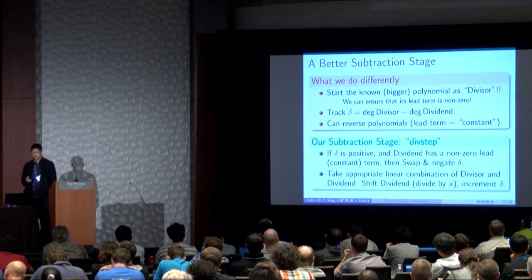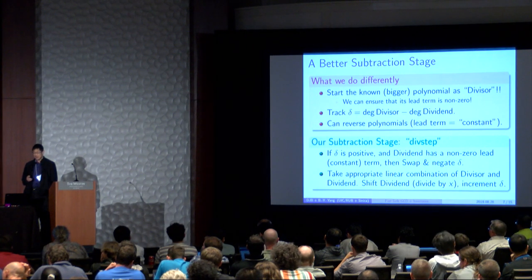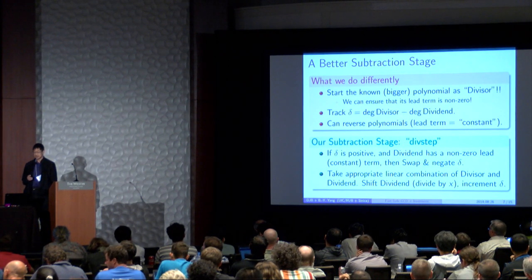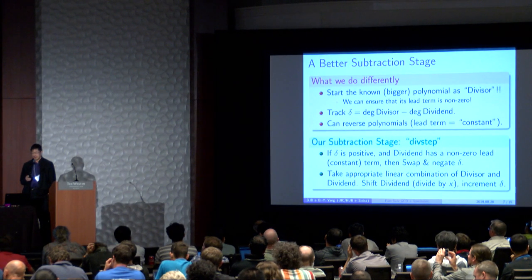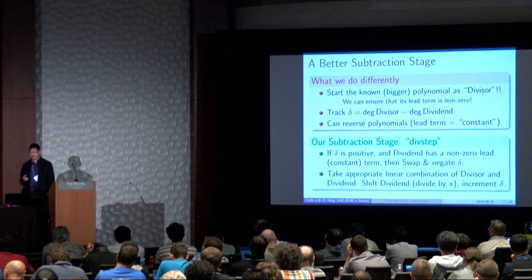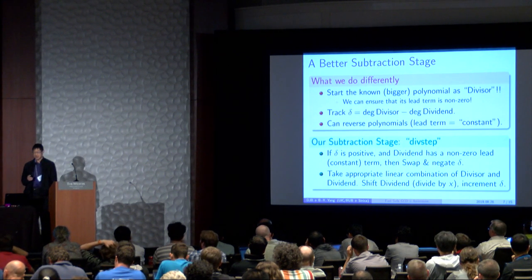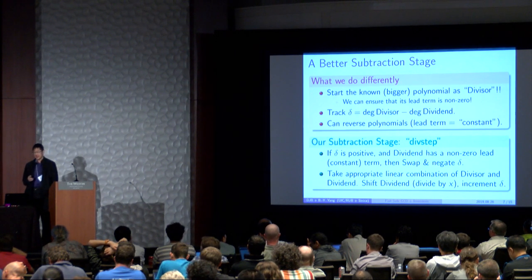And we can reverse the polynomials to make sure that the leading term corresponds to the constant. So here's our subtraction stage, which we will call divstep. If delta is positive and the dividend has a non-zero leading term, then we will swap and negate delta. And then we will take an appropriate linear combination of the two polynomials. We will shift the dividend, which means divide by x and increment delta.